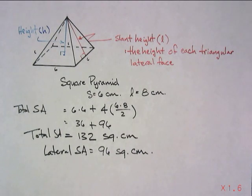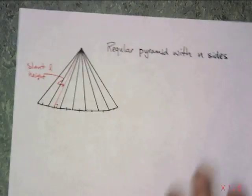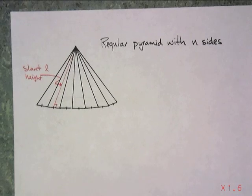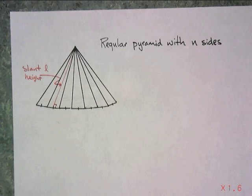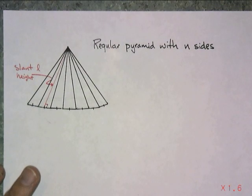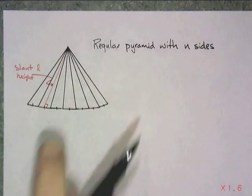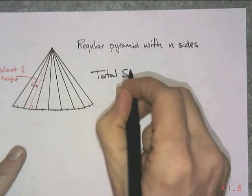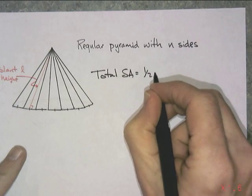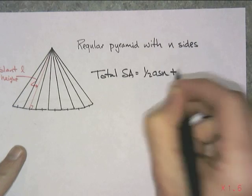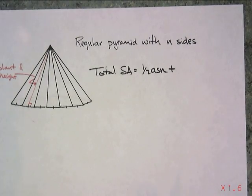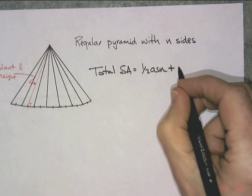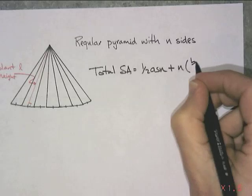Now let's talk about if I have a regular pyramid with n sides. So hopefully we can come up with a formula for everything. So I'm not going to tell you how many sides, but I am going to tell you that it's regular. So if it's regular, every one of the triangles is going to be the same. And the base is a regular polygon. So total surface area, regular polygon, one half ASN plus triangles. Well, how many triangles do we have? We have n triangles, right? And each triangle is just base times height divided by 2.